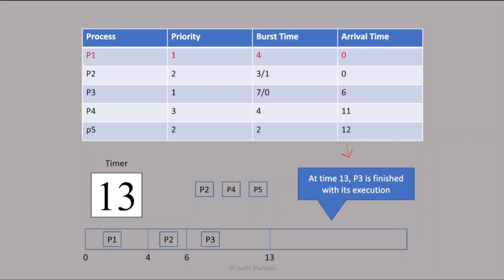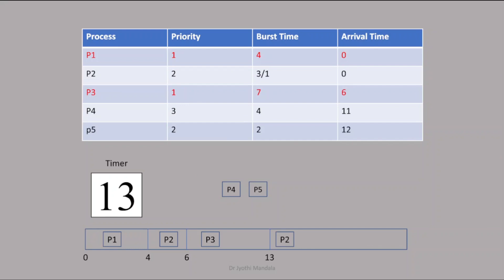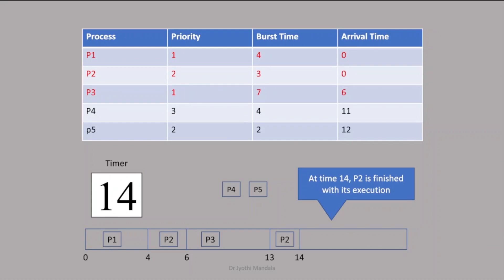All processes have arrived into the ready queue. Now between P2, P4, and P5, which process do we select? Whenever we have more than one process in the ready queue, we go with priority. P2 priority is 2, P4 priority is 3, P5 priority is 2. P2 and P5 are having the equal highest priority. When two processes have the same priority, the one that arrived first in the ready queue is selected — in our case P2 came first. P2 requires only 1 second remaining, so P2 executes and finishes.